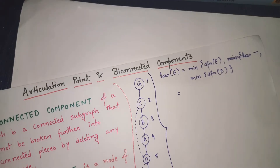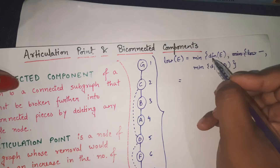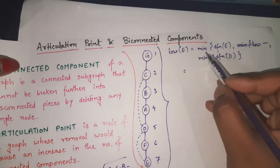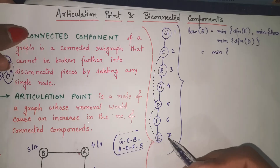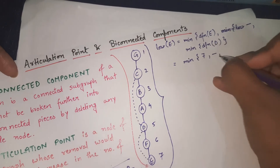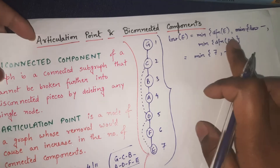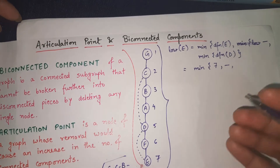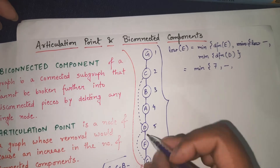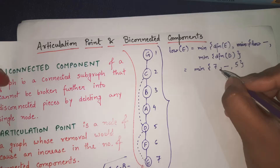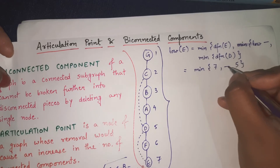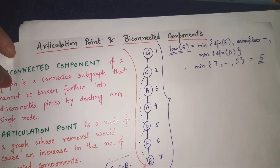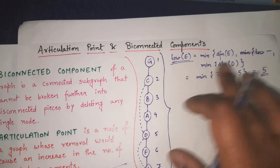DFN values are simply the starting traversal numbers written beside each node in the tree. So DFN(E) = 7 and DFN(D) = 5. When there are multiple back edges you write the minimum DFN among them, but here there is only one back edge. The minimum of 7 and 5 is 5, so LOW(E) = 5.